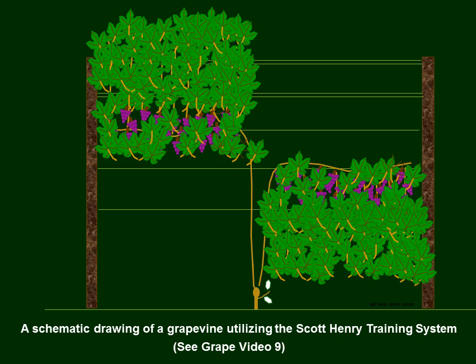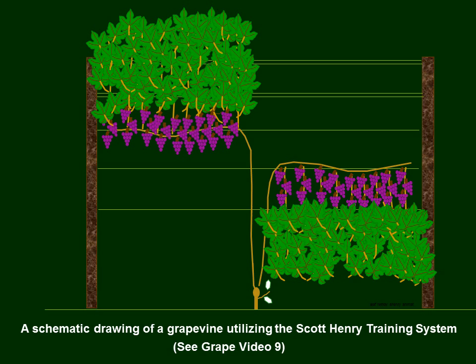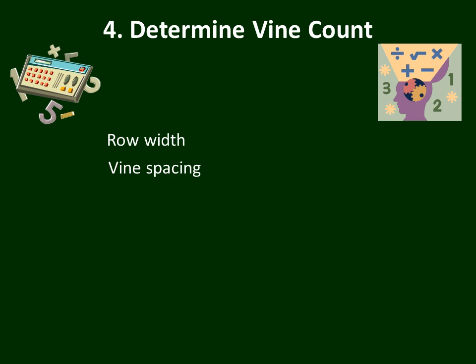Here's the Scott Henry system, and after some leaf removal this is what we have on eight-foot trellises. If you're interested in Scott Henry and haven't looked at it, you can go back to Grape Video 9. For a home planting worked with a garden tractor, you might want rows only five to six feet wide as long as you can get through, and then a trellis that's five to six feet high. You have to decide row width as part of your vineyard design in order to determine vine count.